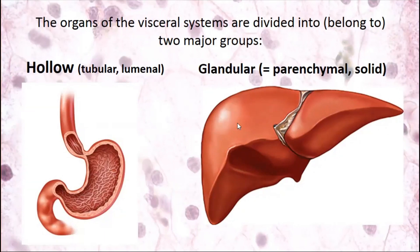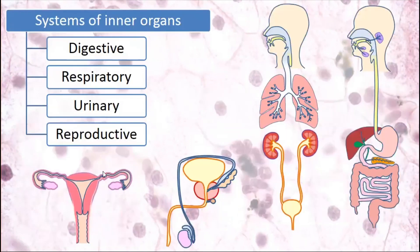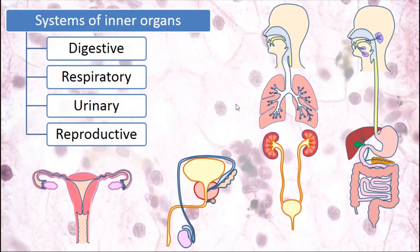Different solid organs include, in the digestive system: salivary glands, liver, and pancreas. In the respiratory system, the parenchymal organ is the lung. In the urinary system, parenchymal organs are the kidneys. In the male reproductive system, there are testicles and accessory glands — prostate gland, seminal vesicles, and bulbourethral glands. In the female reproductive system, there are ovaries and also mammary glands.